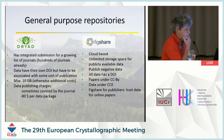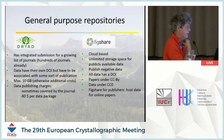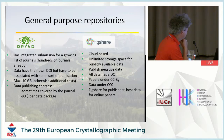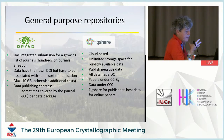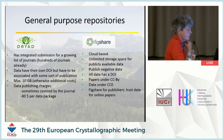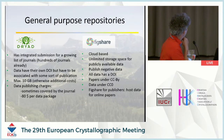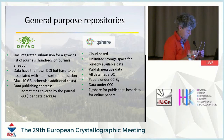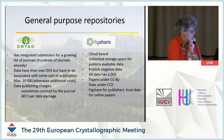A short overview of general purpose repositories that offer options to store raw data: Dryad is used very often by many journals to store supplementary raw data — for instance Nature and Science use it. You get your own DOI, the maximum you can store is 10 gigabytes, and charges are sometimes covered by journals.